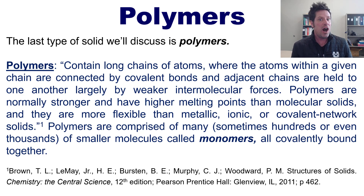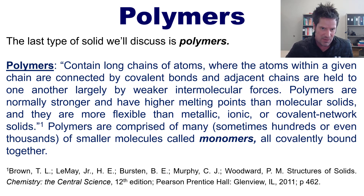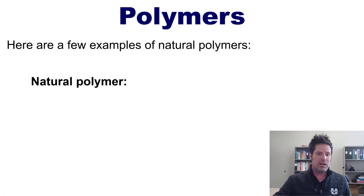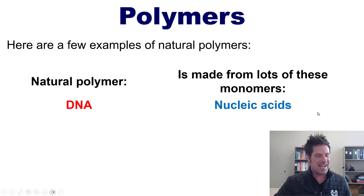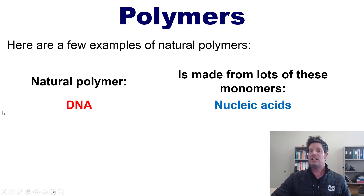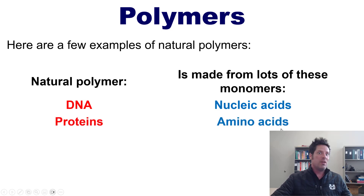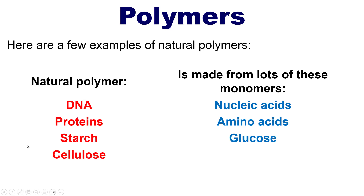Polymers are comprised of many — sometimes hundreds or even thousands — of smaller molecules called monomers, all covalently bound together. Here are a few examples of natural polymers: DNA is made from monomers called nucleic acids — the G's, C's, A's, and T's from biology. Proteins are made of amino acids, starch is made of glucose monomers, and cellulose is a different structural polymer also made from glucose.